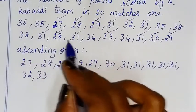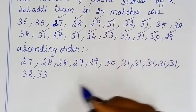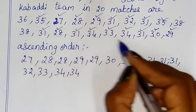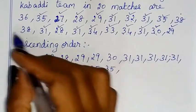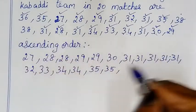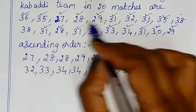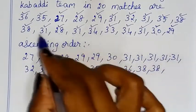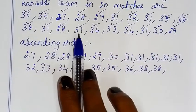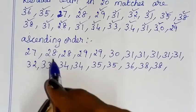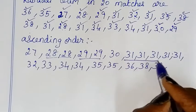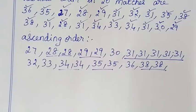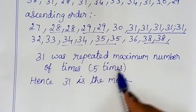34 repeats 2 times. 35 repeats 2 times. 36 repeats 1 time. 37, 38 repeat 2 times each. The maximum number of times repeated is the number 31, which was repeated 5 times. Hence 31 is the mode.